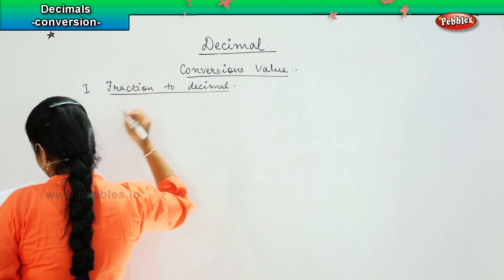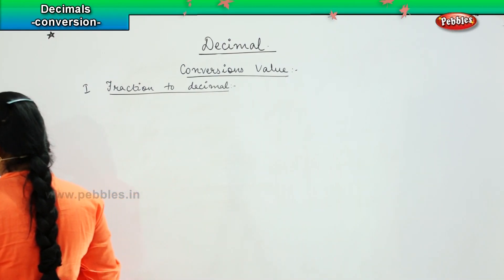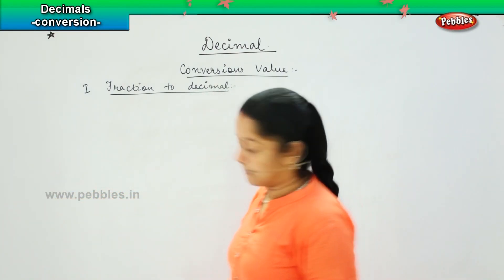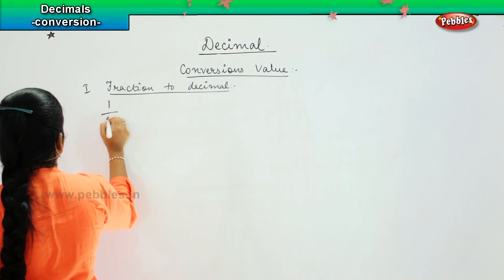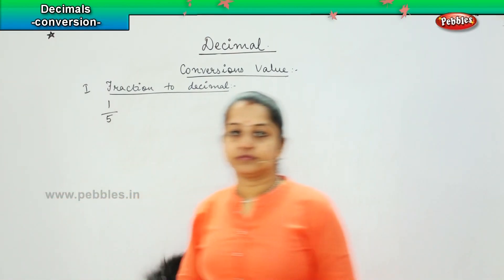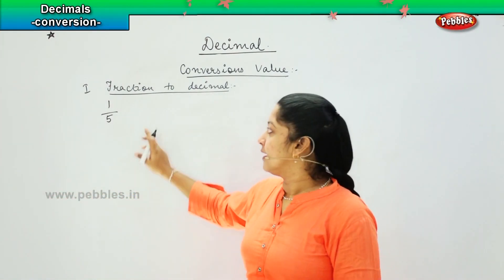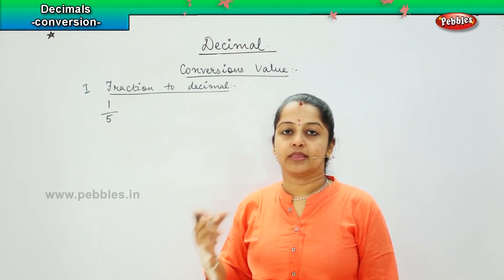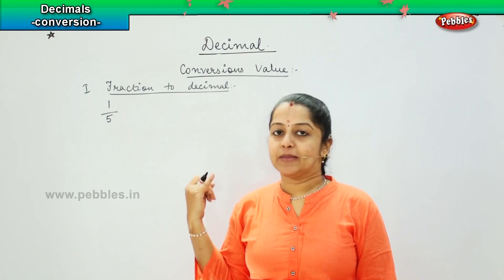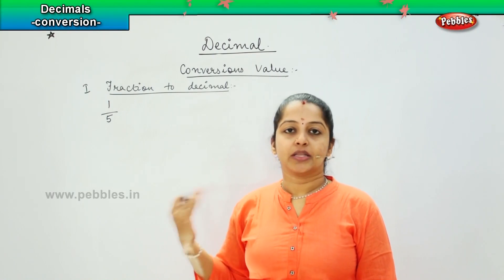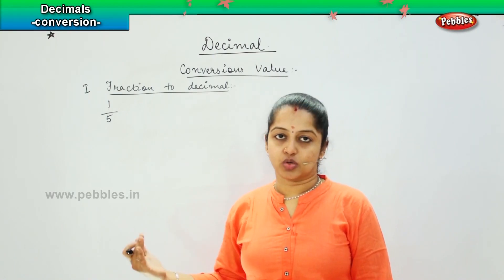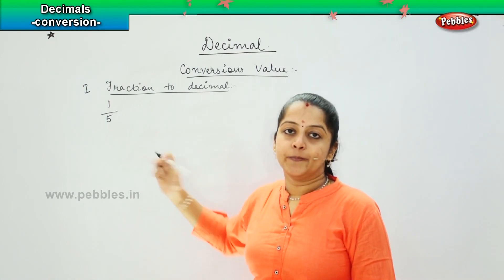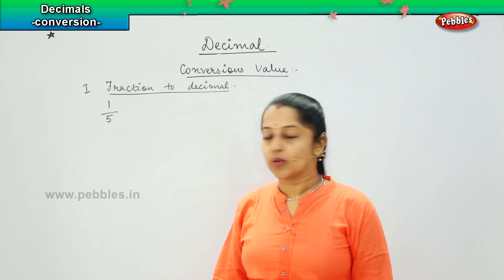What do you mean by conversion of fraction to a decimal, children? Now, if I say that I have to write a number 1/5, so this is a fraction, right. Now, in order to convert into decimal, we always have to convert the value in the multiples of 100. It can be either 10, 100, 1000, 10,000, and it goes on. So the ultimate logic is you have to convert this number in zeros value.